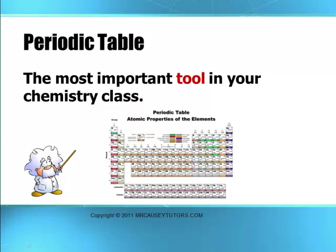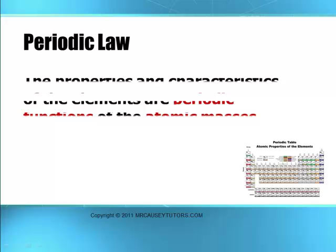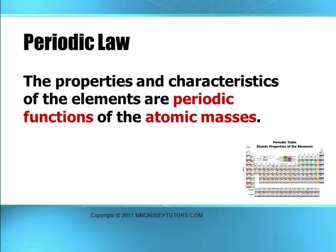So get that periodic table down. The periodic table was based on the periodic law, and the first periodic law stated that the properties and characteristics of the elements are periodic functions of their atomic masses. It was developed by Dimitri Mendeleev, and about 1869-1870 he presented his ideas to the scientific community about how he saw patterns, repeating patterns in the different elements and how they could be arranged in a table or chart.